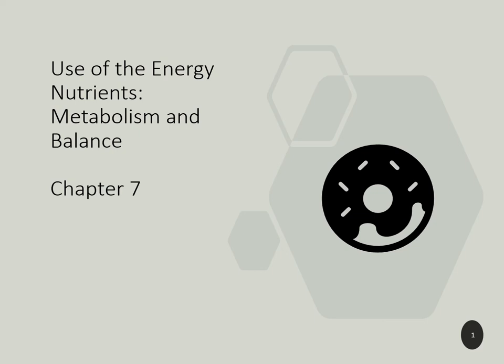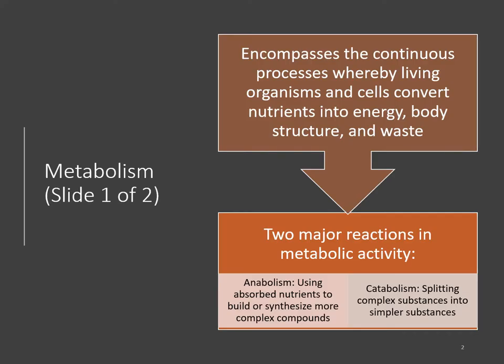We're going to start Chapter 7, which is the use of energy nutrients, metabolism and balance. Metabolism is defined as the continuous processes whereby living organisms and cells convert nutrients into energy, body structure, and waste. They are controlled by two major reactions in metabolic activity. Anabolism is using absorbed nutrients to build or synthesize more complex compounds — think anabolic steroids, they build.